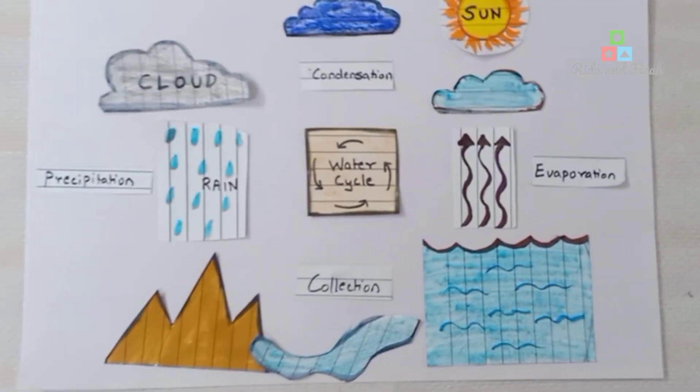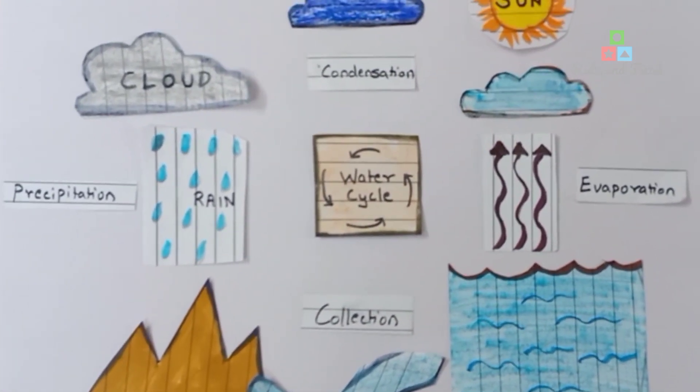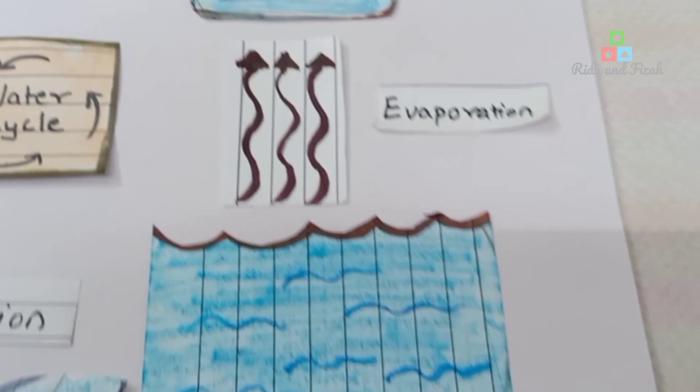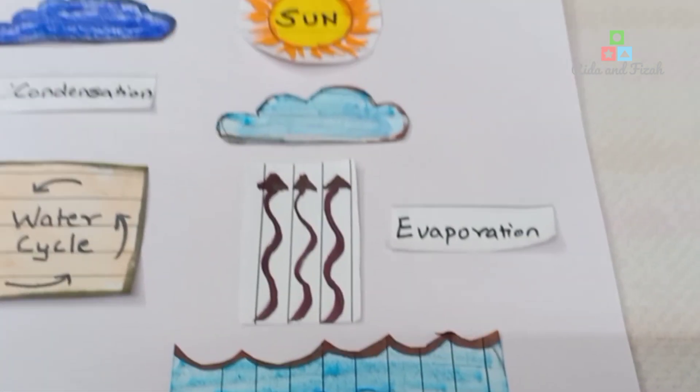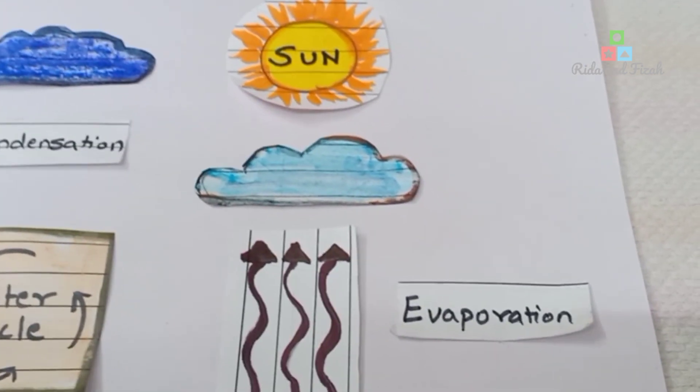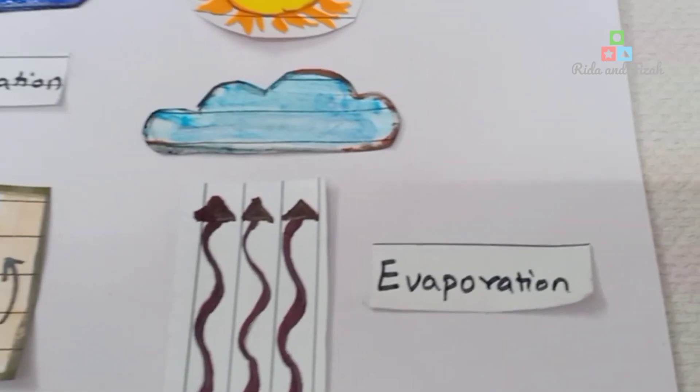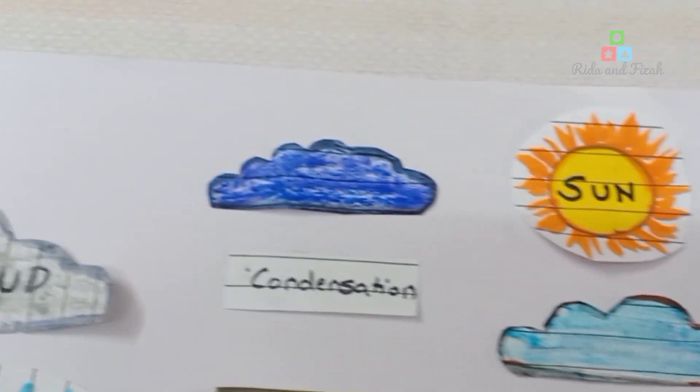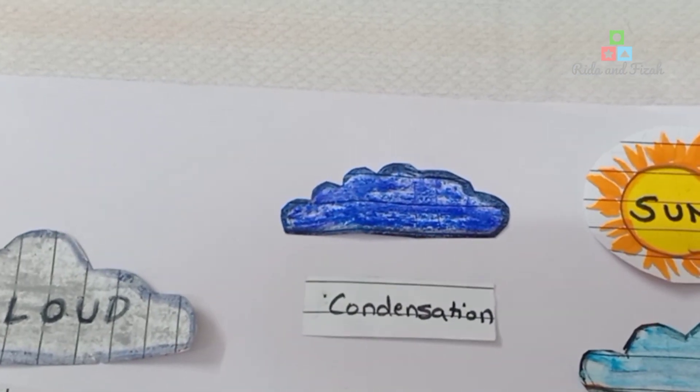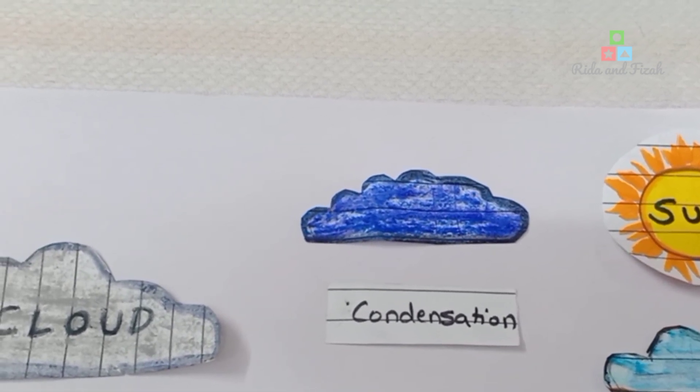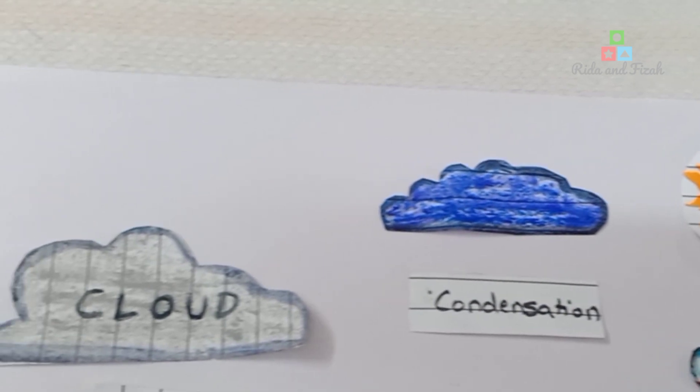The water cycle is the way water moves around the earth. Water from water bodies evaporates due to the sun's heat in a process called evaporation. As water vapor rises higher, it cools to form clouds in a process called condensation.